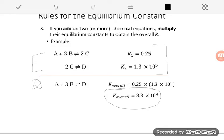So if you reverse, you take the inverse. If you multiply an equation, you use that multiplication factor as an exponent. And if you add up chemical equations, you're going to multiply their equilibrium constants together.